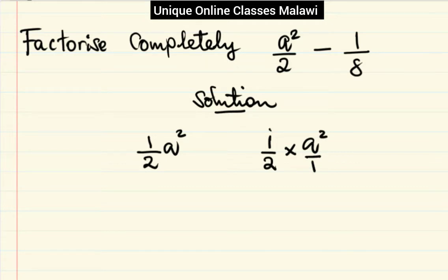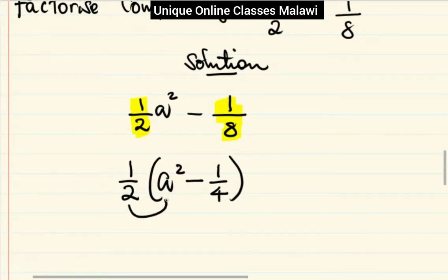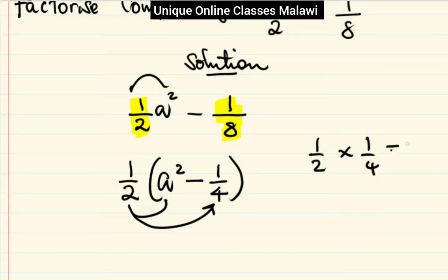Then we can write minus one over eight. We can take out the half, so let's take out half here. Half of the level, it's only a squared, then the minus half of the level, it's only one over four. If we can multiply this you get a squared, and if you can take that one, one over two times one over four, when you multiply, that's one over eight.